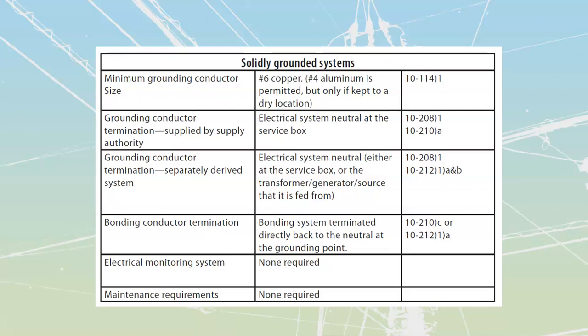Let's take a look first at solidly grounded systems. I've broken it all down into tabular form. Line 1 and line 3 are modules written for the provincial curriculum, so I tend to take a little bit of ownership over them. Minimum grounding conductor size is going to be determined off of rule 10-1-1-4, sub one, which tells us it's going to be number six copper, but we are allowed to use number four aluminum provided it is kept in a dry location.